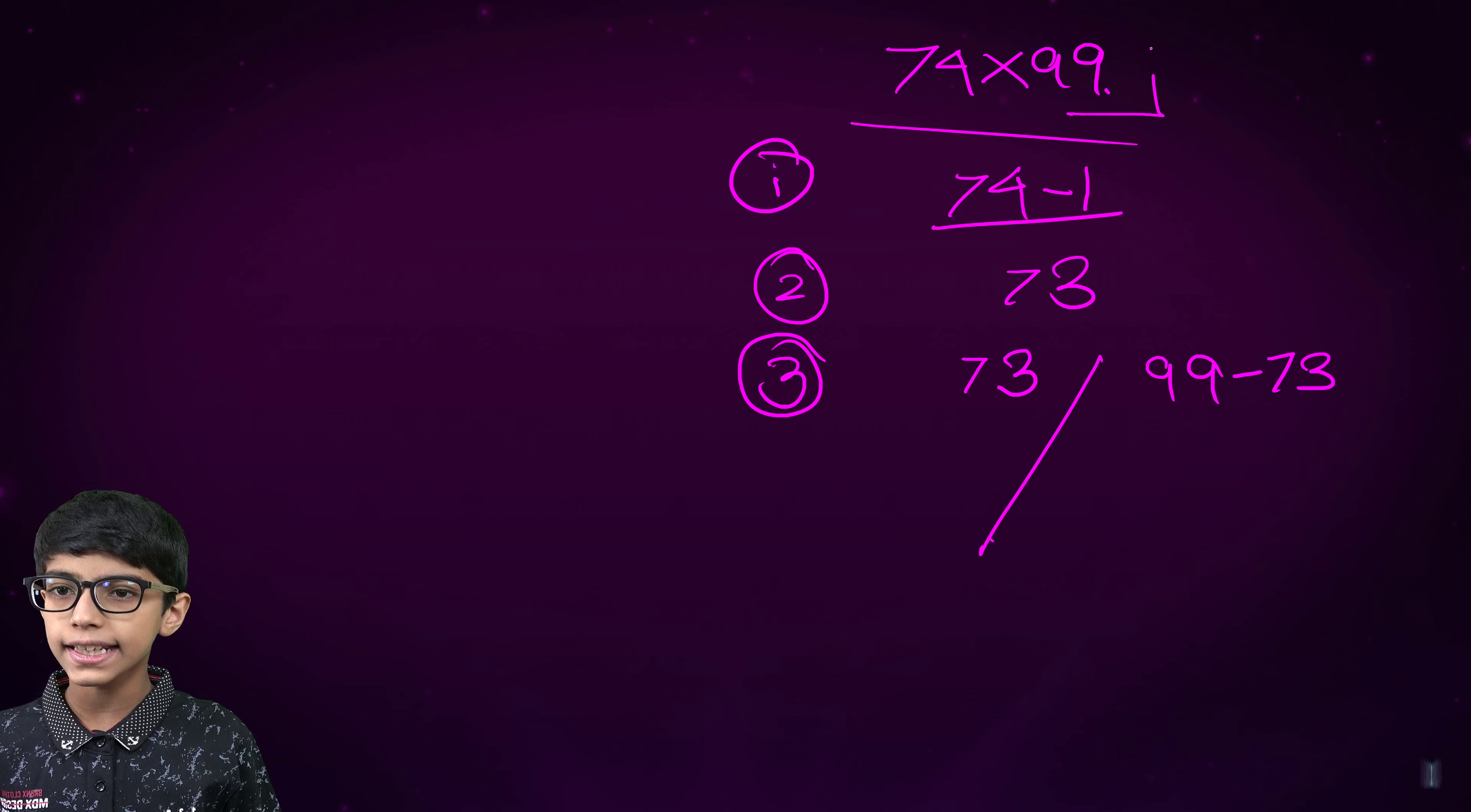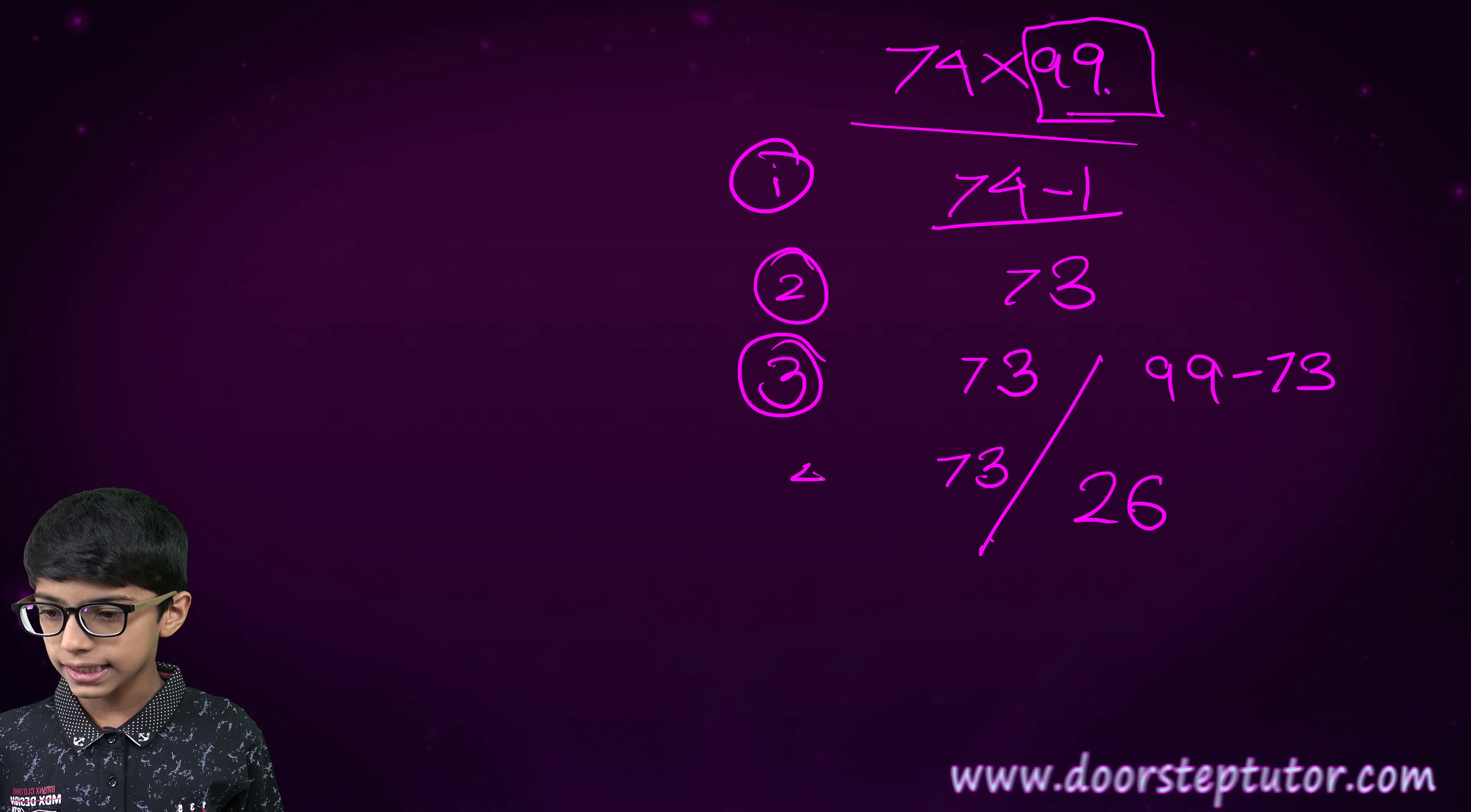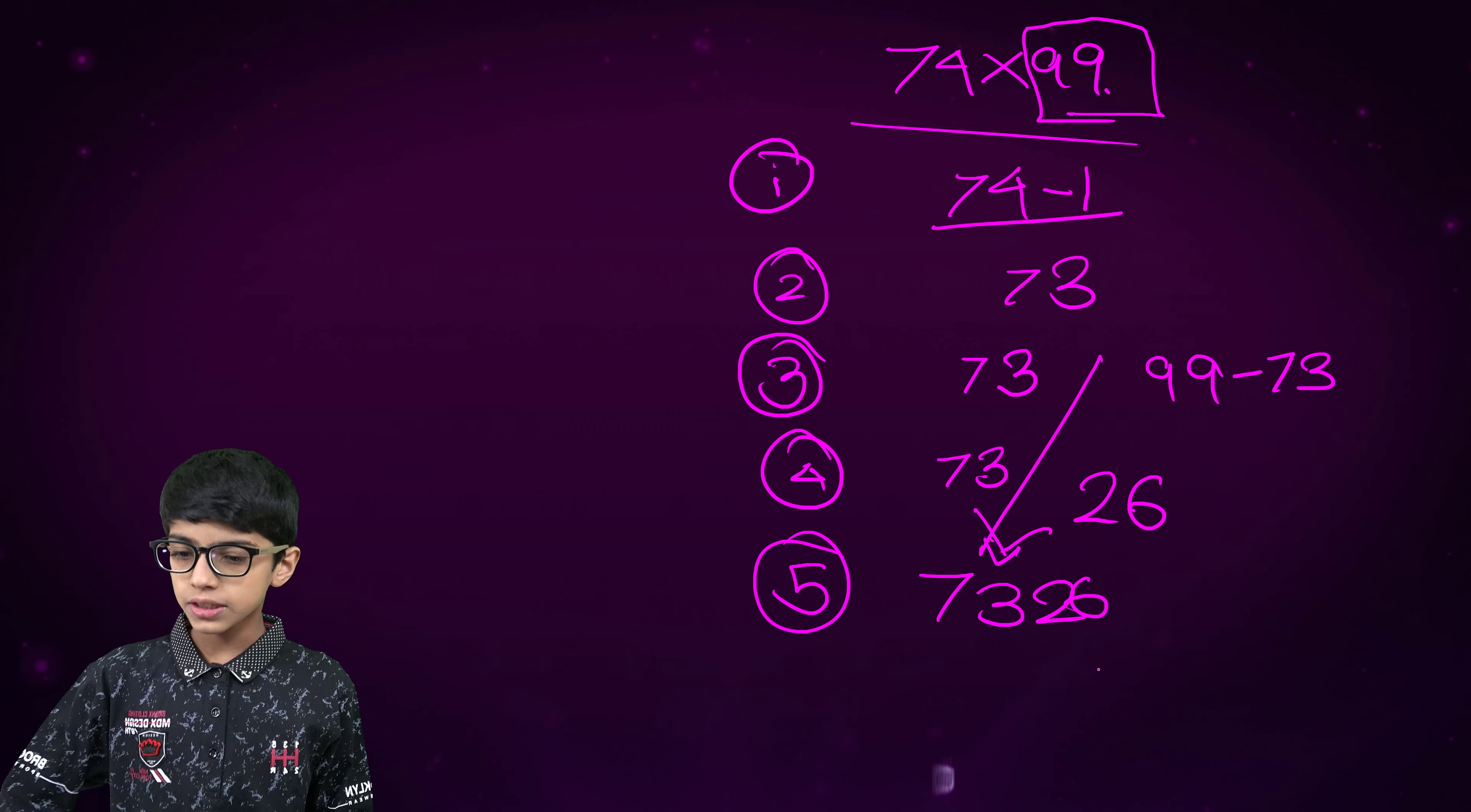Because 99 is the multiplier. 73 will come down and 99 minus 73, we will solve it. That is 26. This was our fourth step. Now, the final step is we will combine these together. Therefore, our final answer would be 7326.